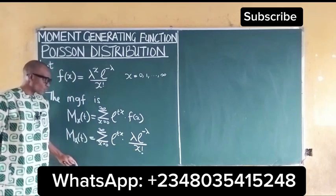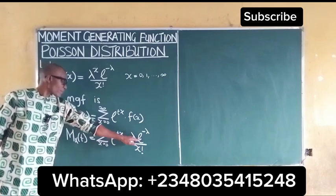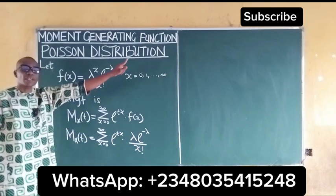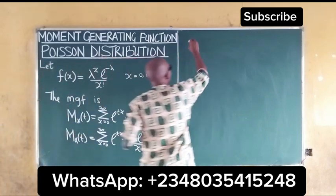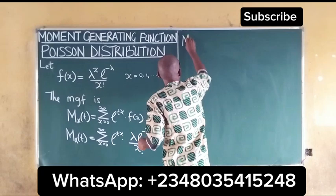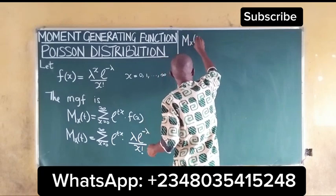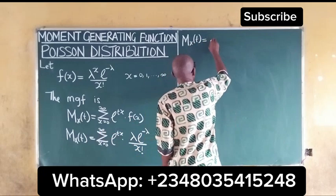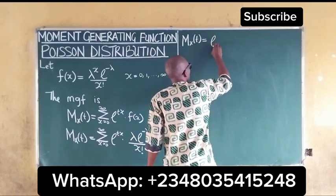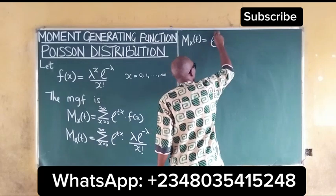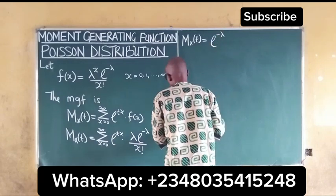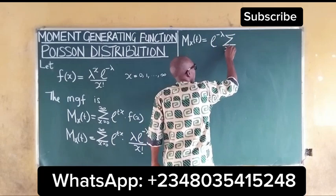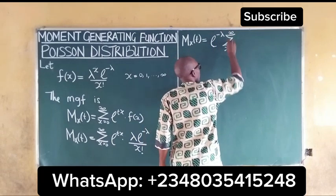The next thing to do — we can bring e^(-lambda) out. So we go over to this other side. We'll have our moment generating function M_X(t) equal to e^(-lambda) times the summation of x as it ranges from 0 to infinity.